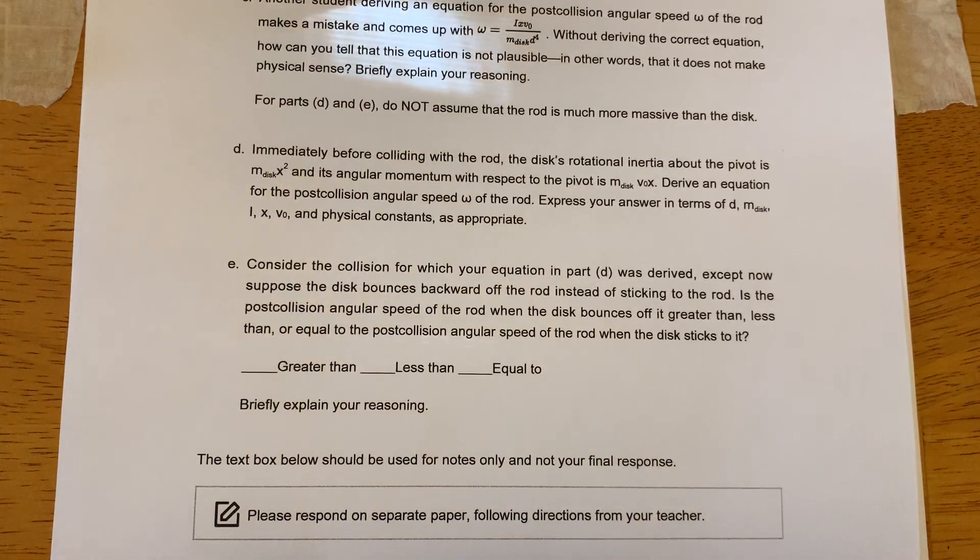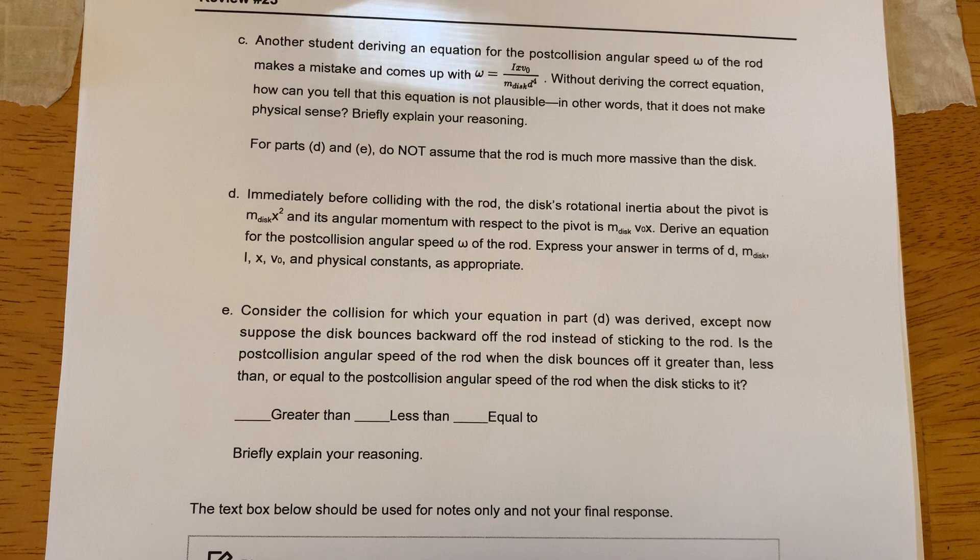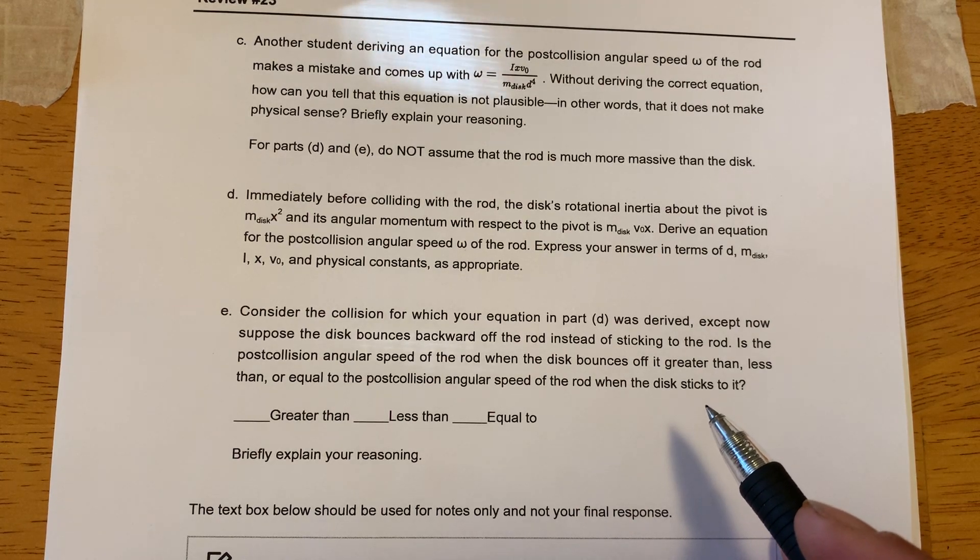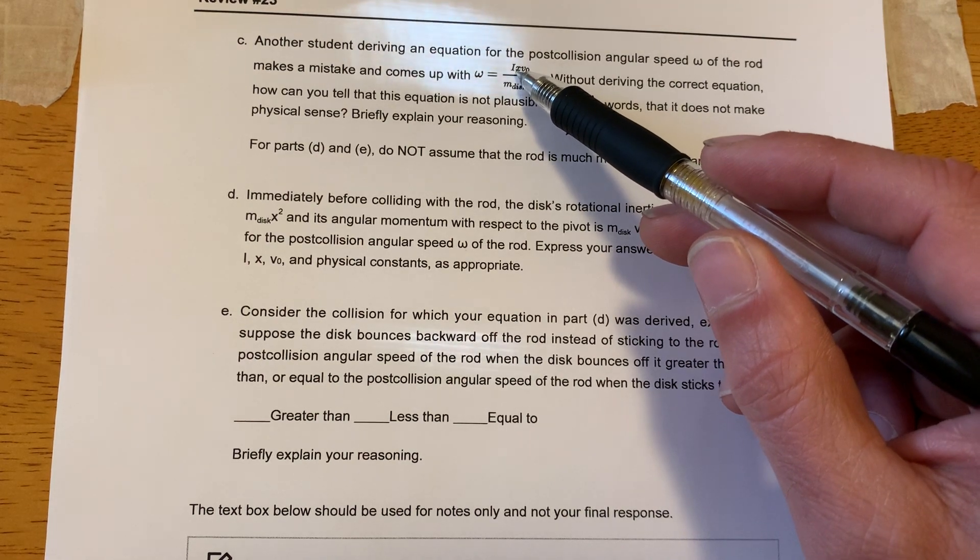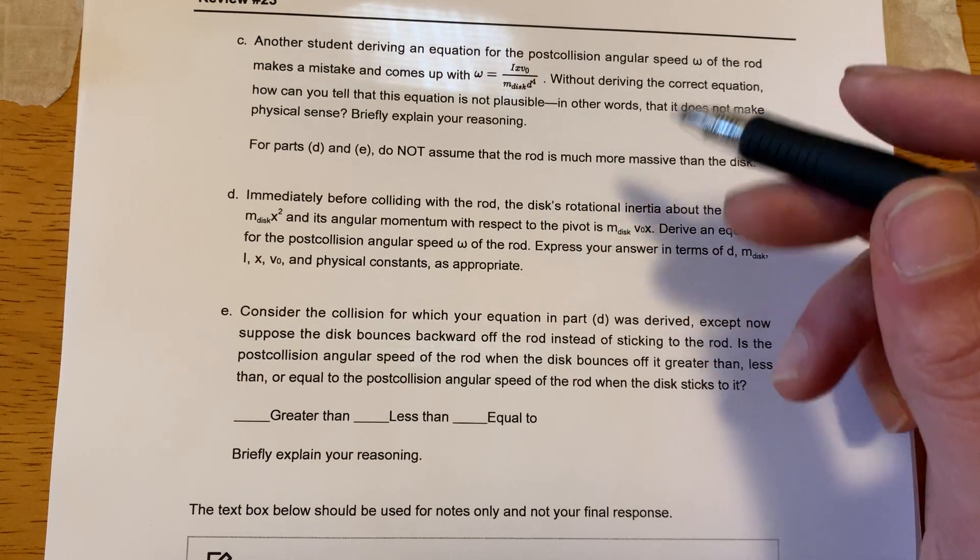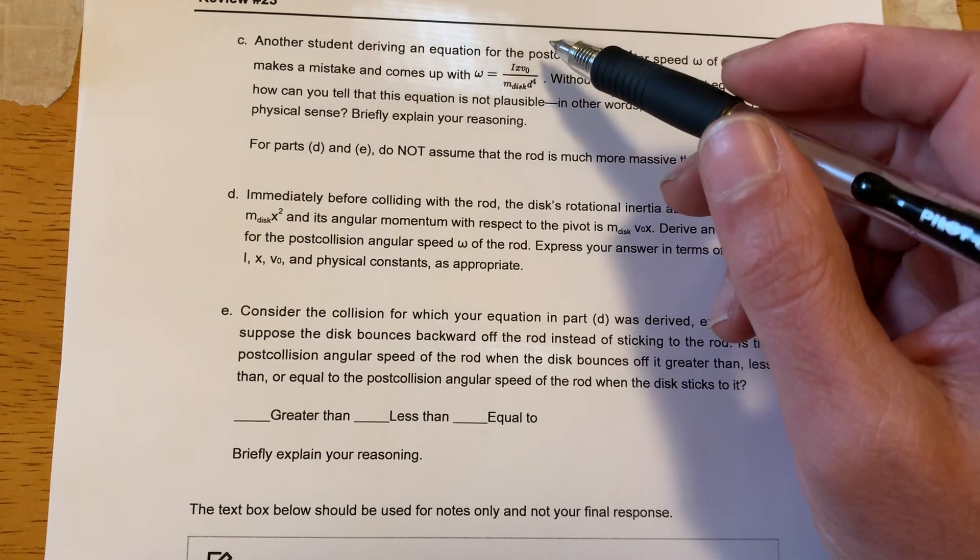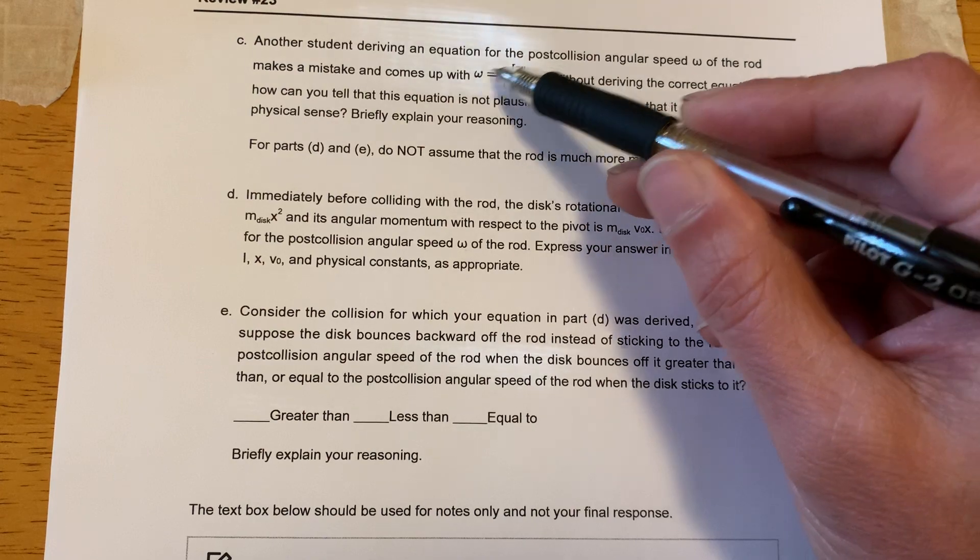Part C. Another student derives another equation. Without deriving the correct equation, can you tell that this equation is not plausible? Okay, so why isn't this plausible? Well, let's take a look at what I really means. I is my moment of inertia. So it's kind of like it's equivalent to my mass in F equals ma. So as this gets bigger, I wouldn't expect that to get bigger.